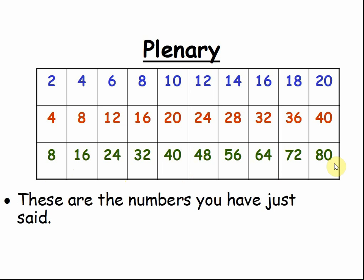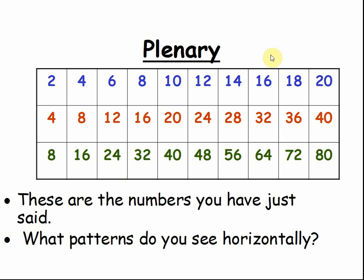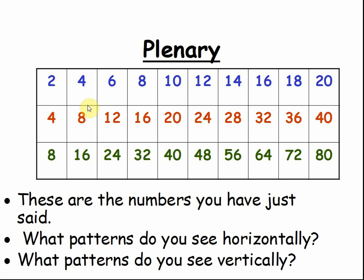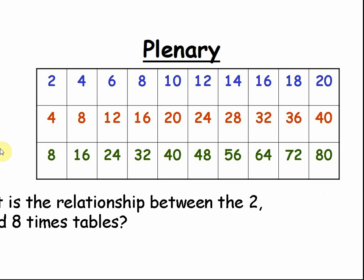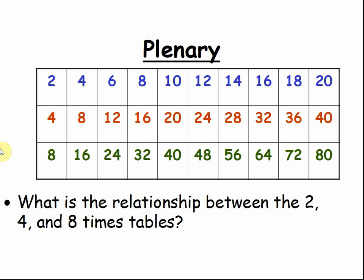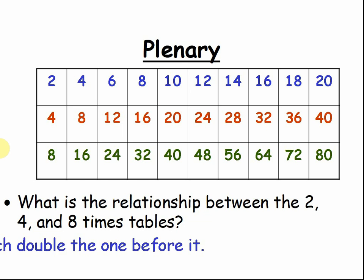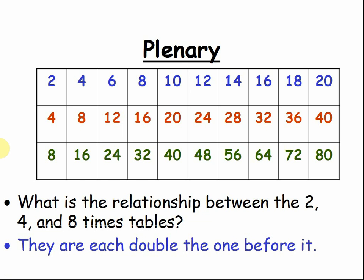These are the numbers you have just said. What patterns do you see horizontally? What can you tell me about those patterns? What patterns do you see vertically? What's happening between 2, 4, and 8, or 4, 8, 16? What's happening in each line going downwards? What is the relationship between the 2, 4, and 8 times tables? They are each double the one before it.